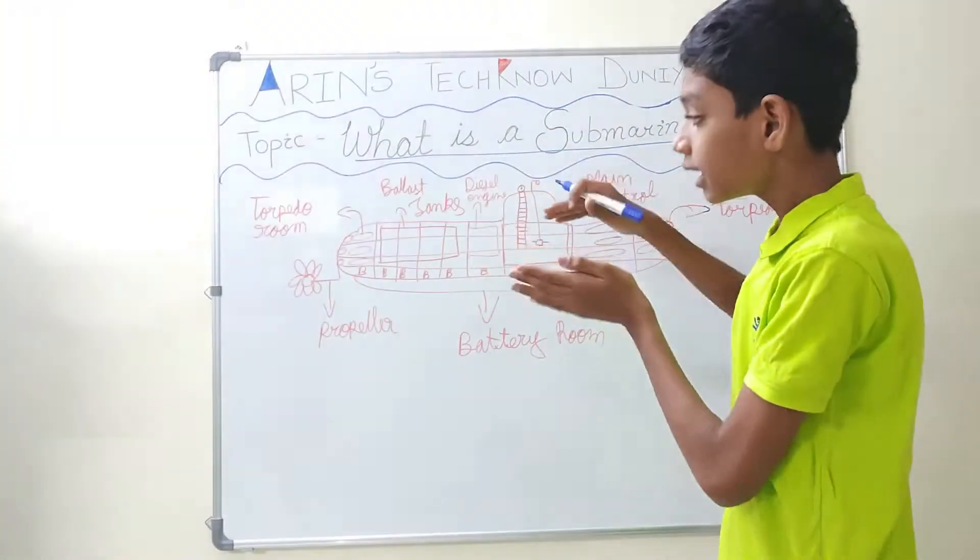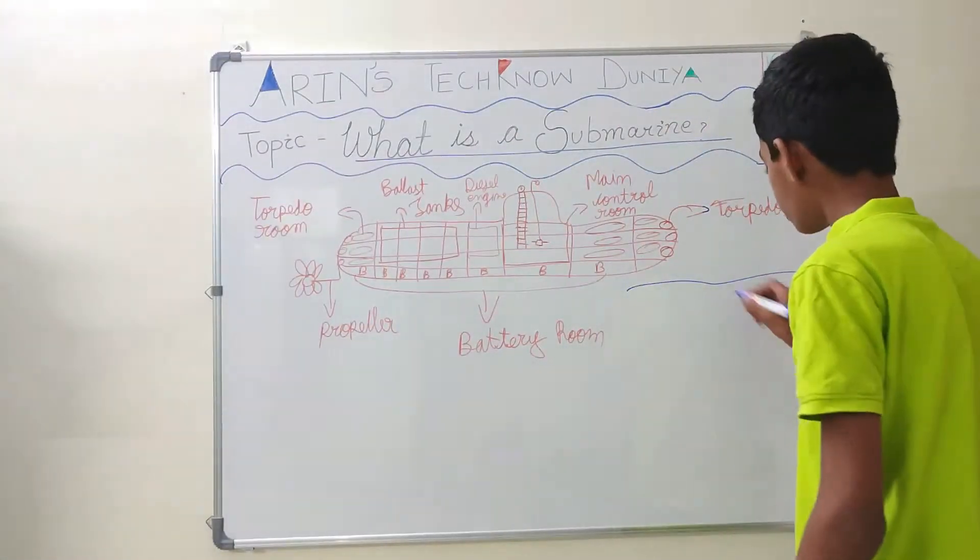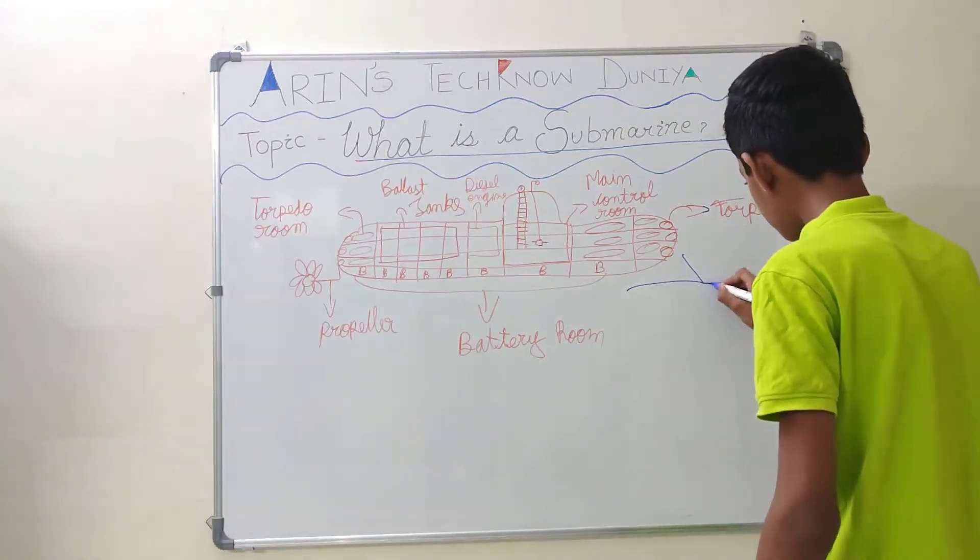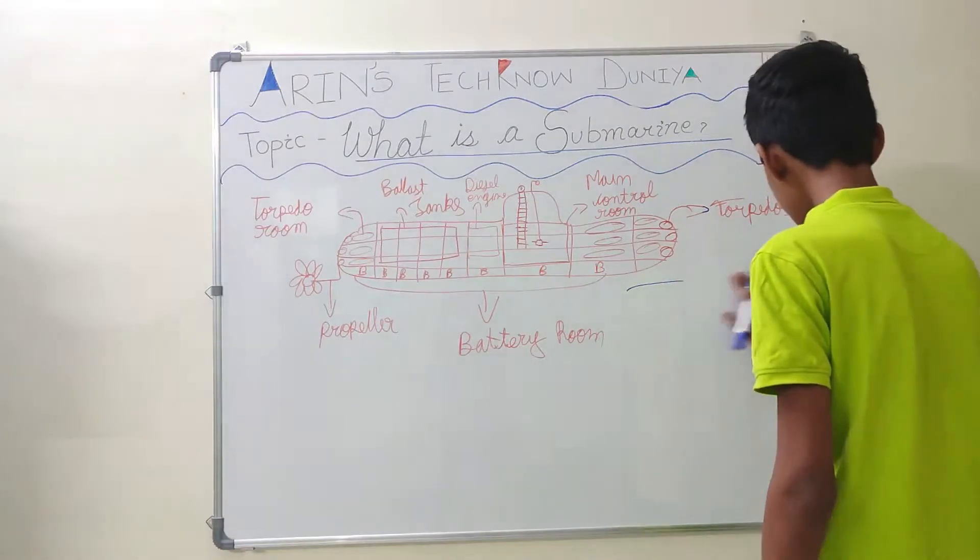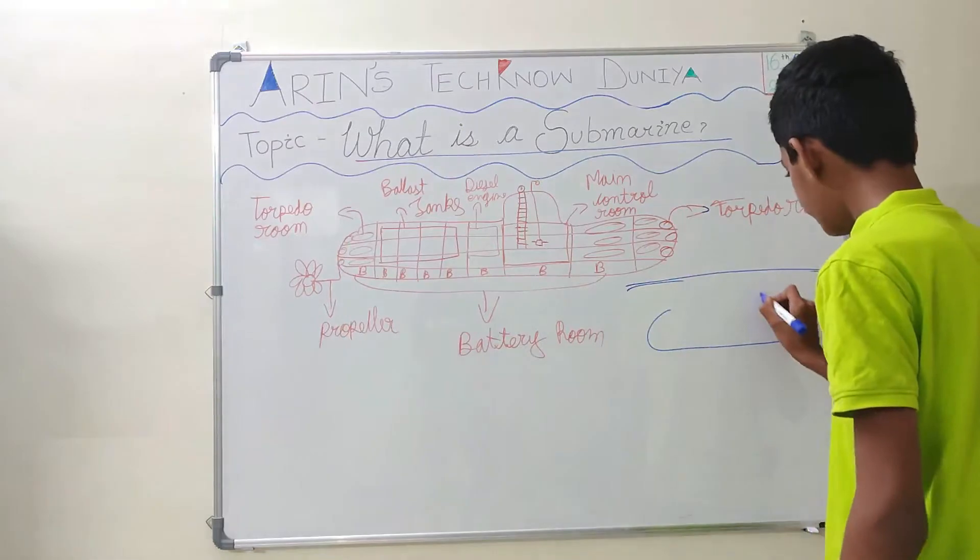A submarine is a boat that can go under the sea. If you can see, this is a sea. Probably what happens is boats sail like this on the top of the water. But in the case of a submarine, it goes inside the water like this.